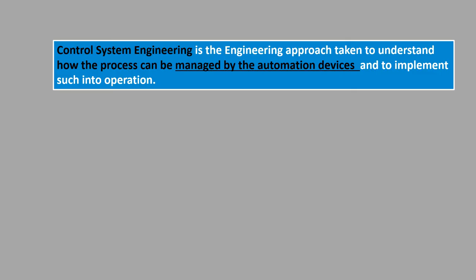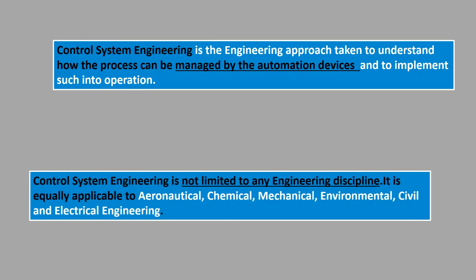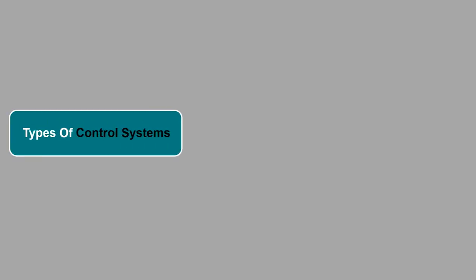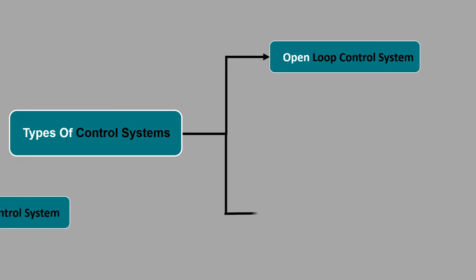Control system engineering is the engineering approach taken to understand how the process can be managed by automation devices and to implement such into operation. Control engineering is not limited to any engineering discipline. It is equally applicable to aeronautical, chemical, mechanical, environmental, civil, and electrical engineering. Depending on the configuration, there are mainly two types of control systems: open loop control system and closed loop control system.